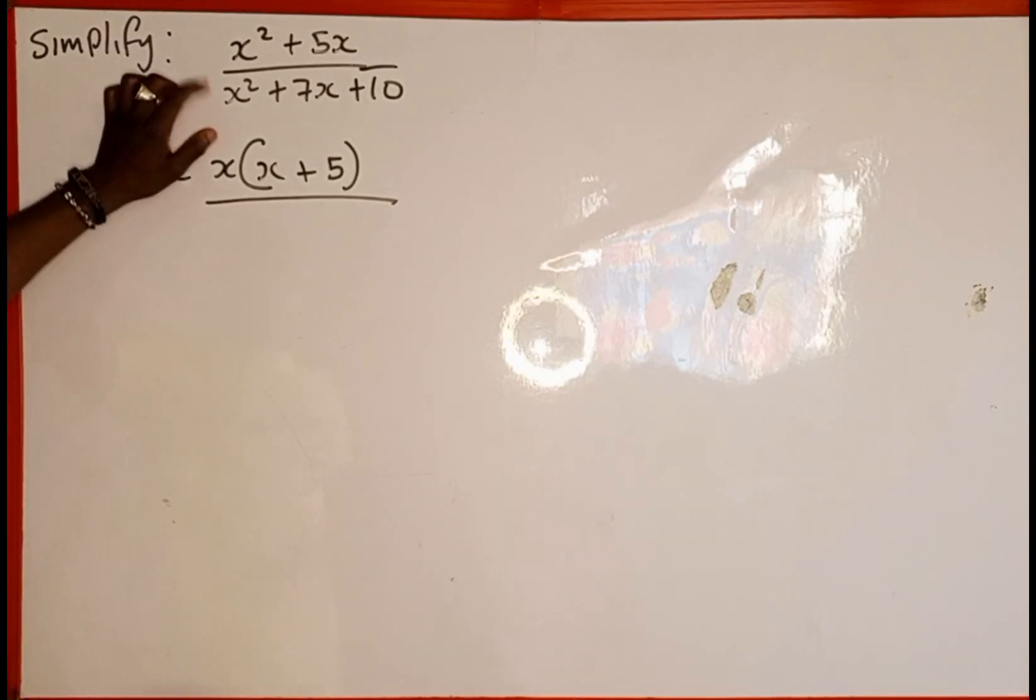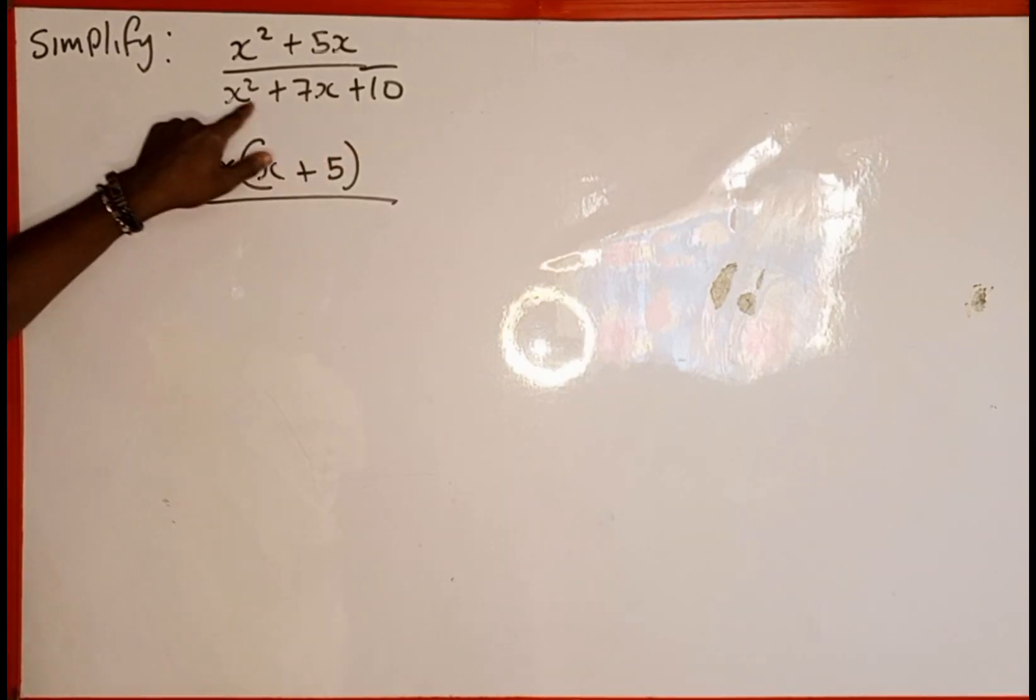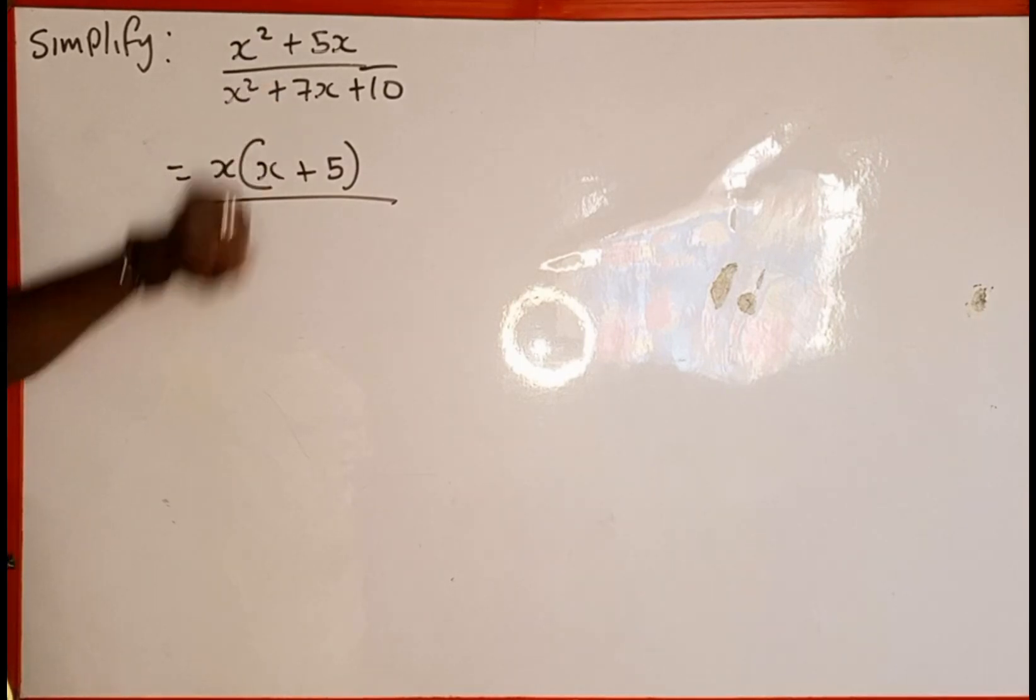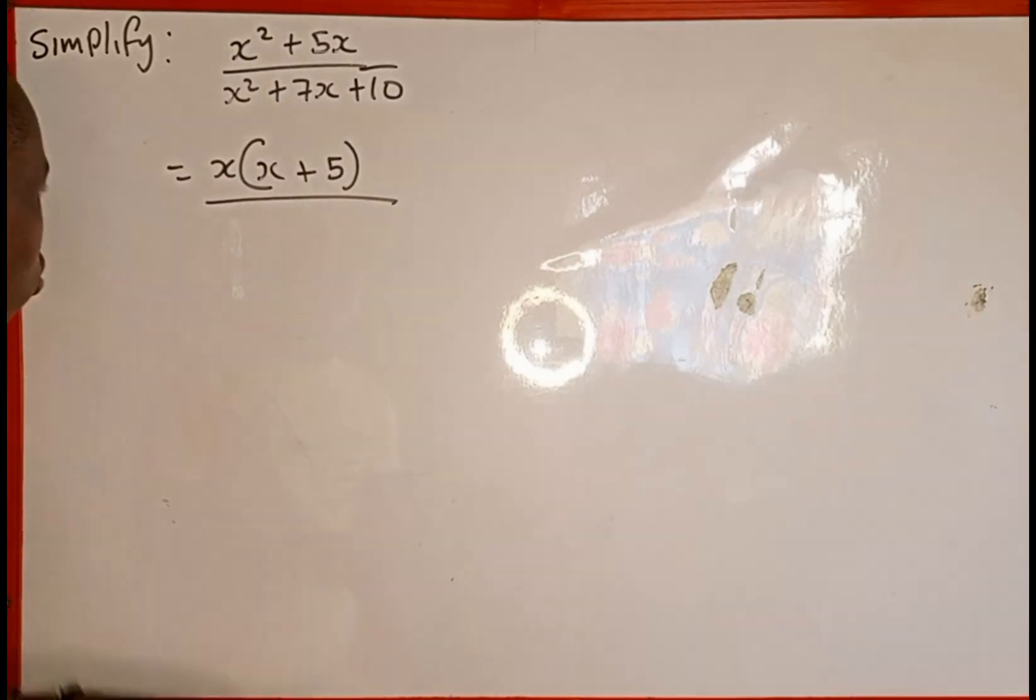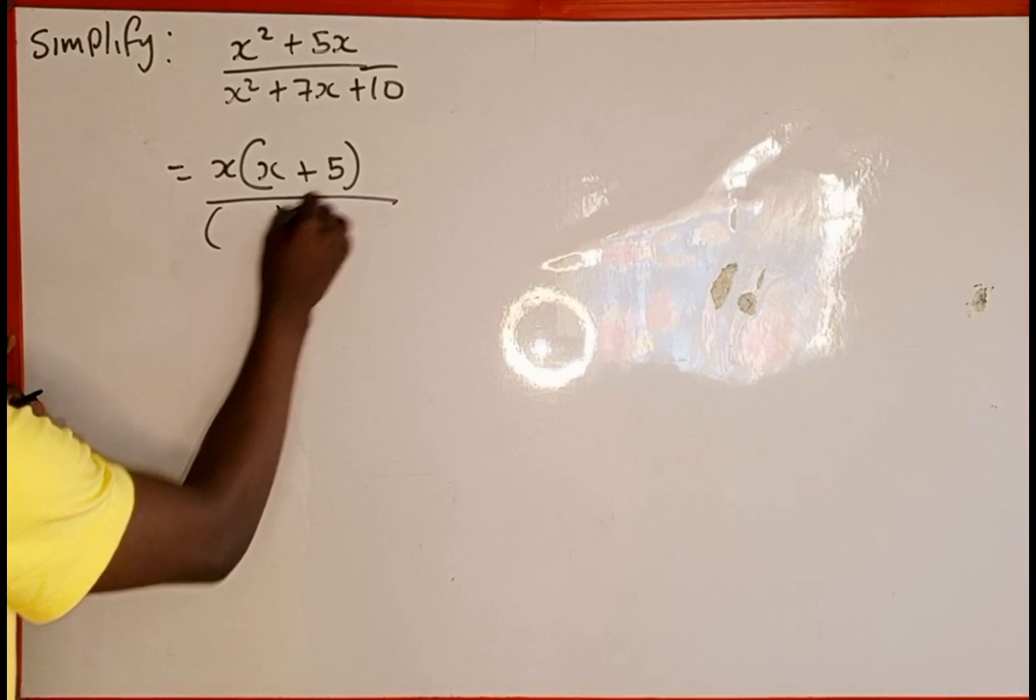If you check the denominator, we notice that this is a quadratic expression because x is raised to the power of 2. And to factorize quadratic expression, we open two brackets.